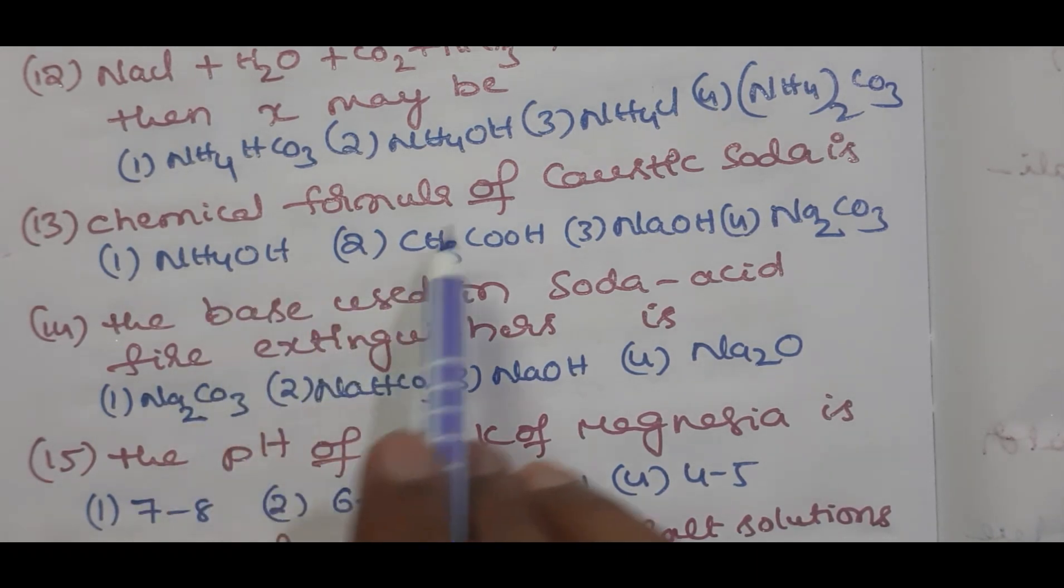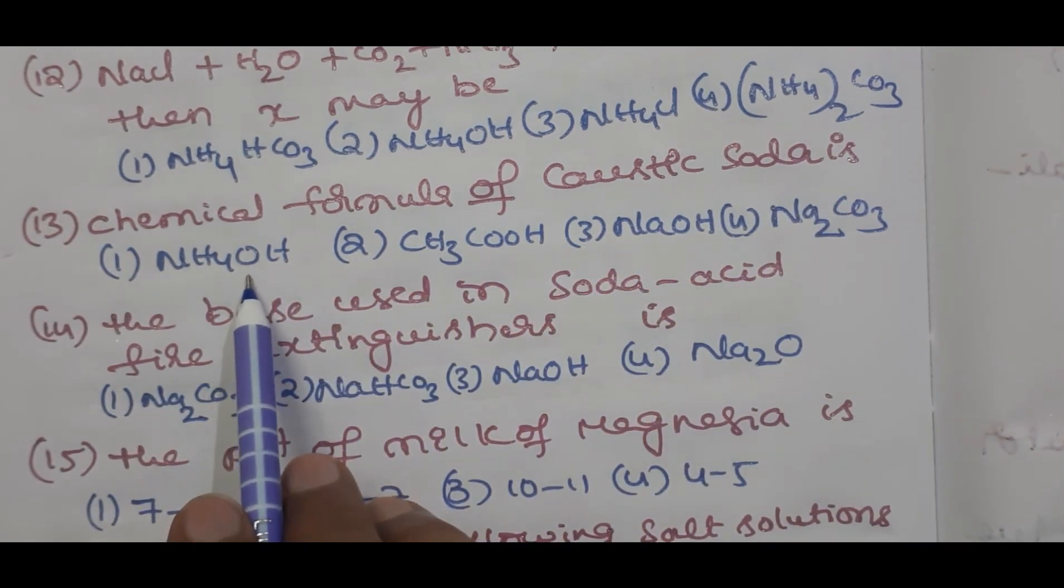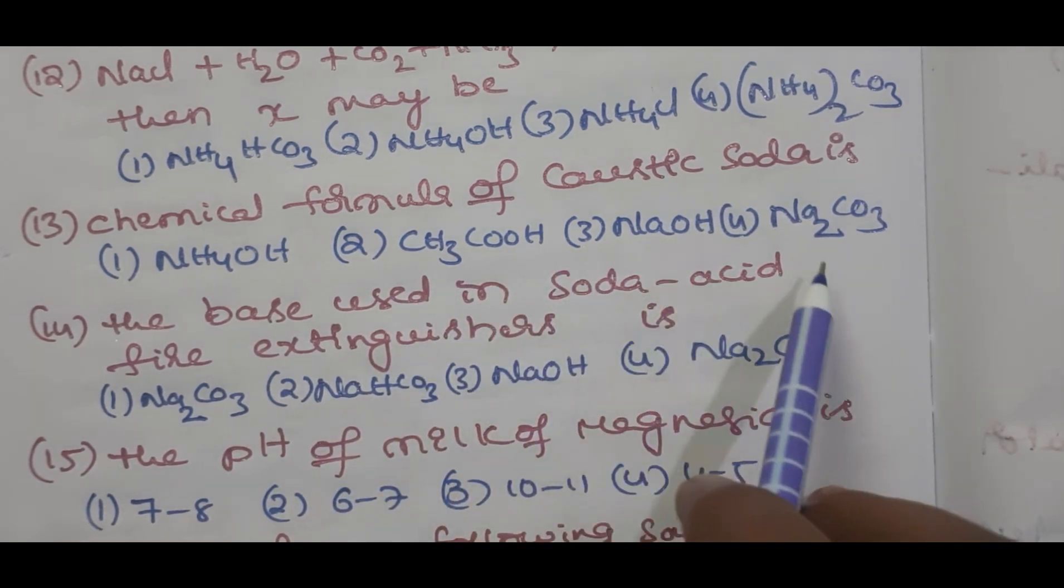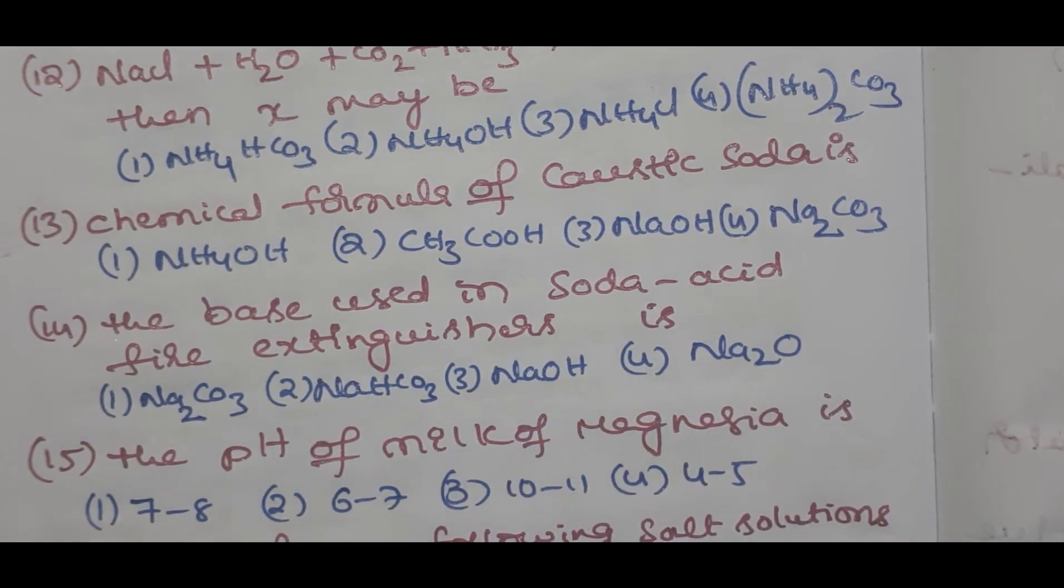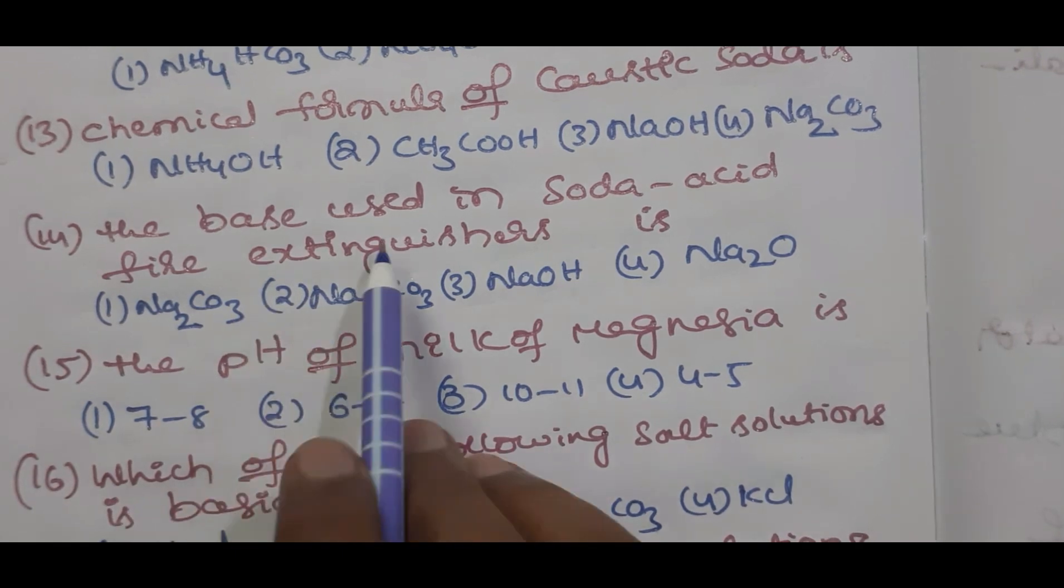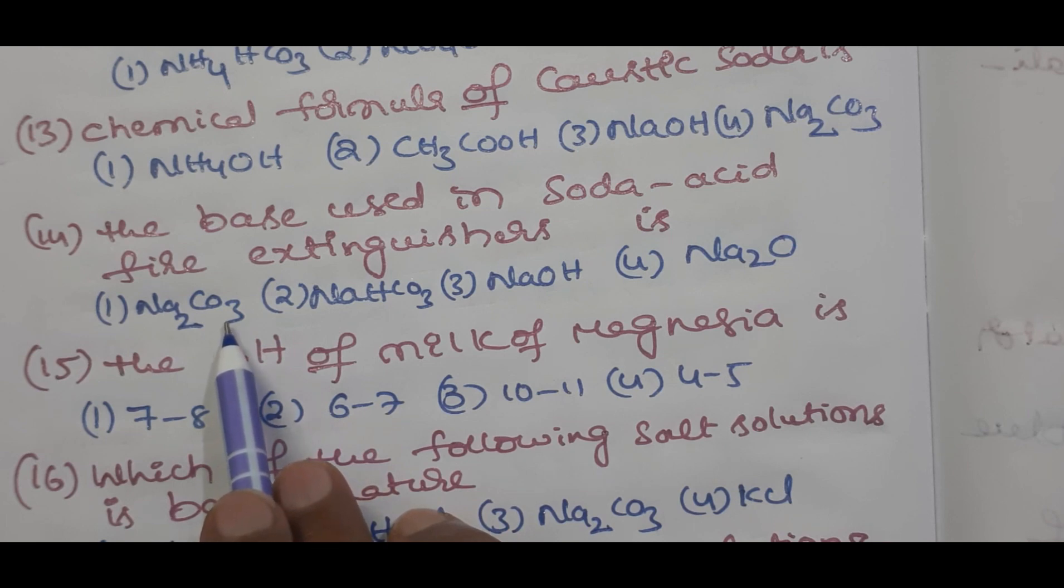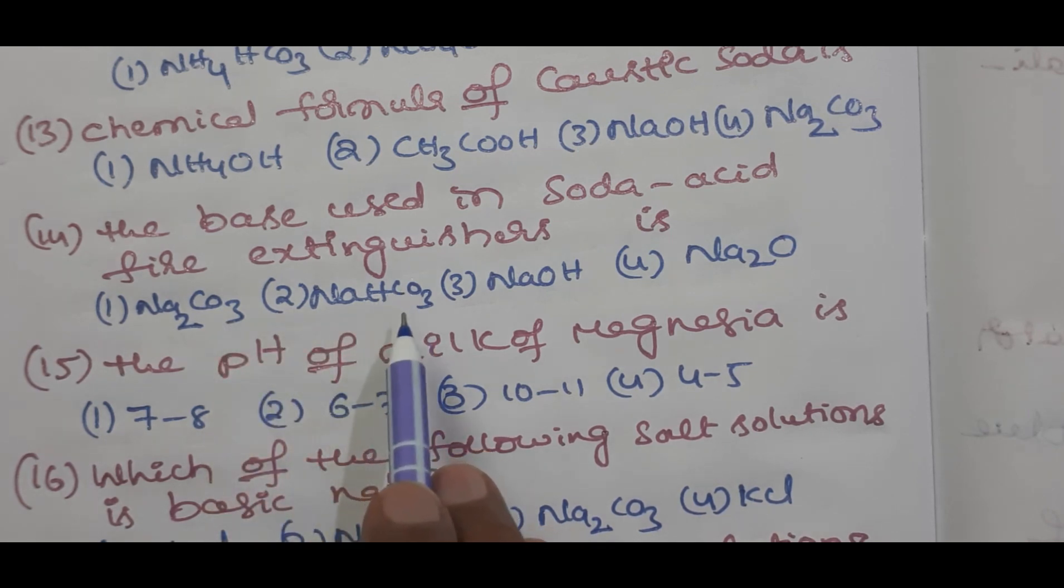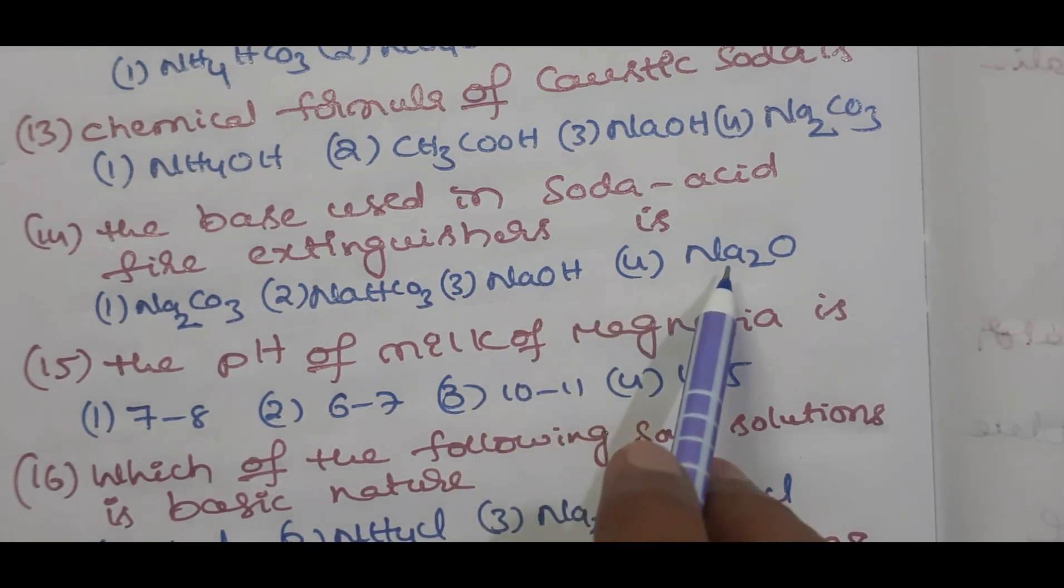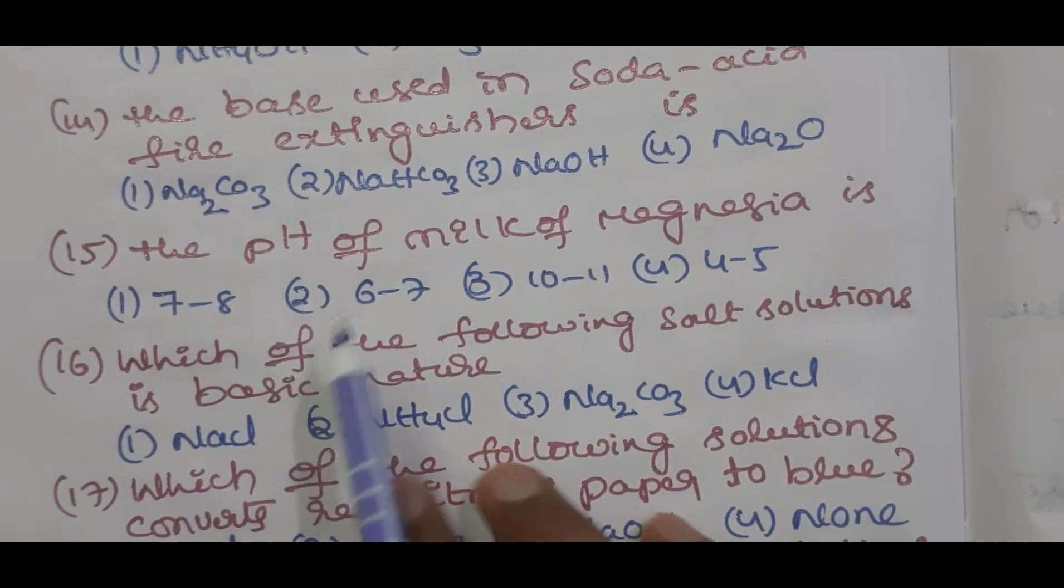Question number 13 students: chemical formula of caustic soda is option one NH4OH, option two CH3COOH, option three NaOH, option four is Na2CO3. Question number 14 students: the base used in soda acid fire extinguisher is option one Na2CO3, option two NaHCO3, option three is NaOH, option four is Na2O.